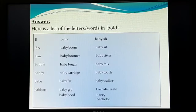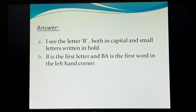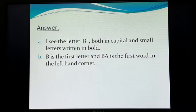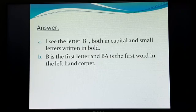The answer to number (a) is: I see the letter B, both in capital and small letters, written in bold. The answer to number (b) is: B is the first letter and 'ba' is the first word in the left-hand corner. Now we will read the text about how the dictionary page has been written.